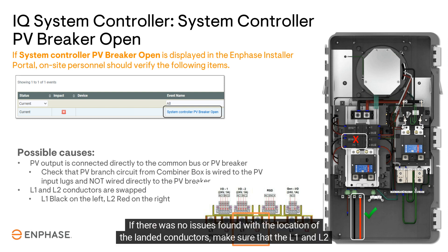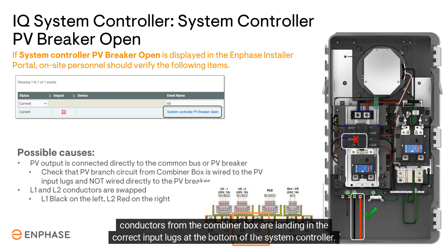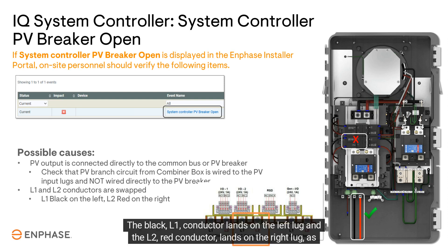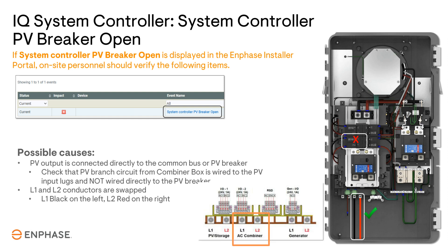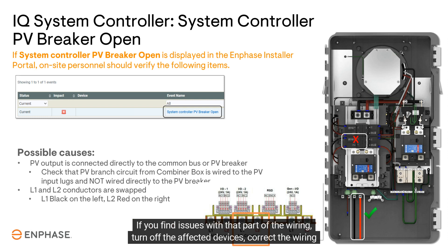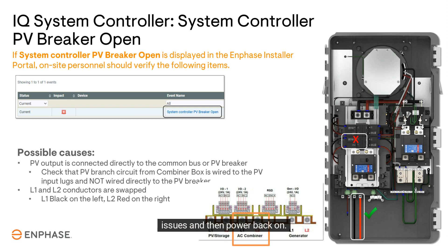If there were no issues found with the location of the landed conductors, make sure that the L1 and L2 conductors from the combiner box are landing in the correct input lugs at the bottom of the system controller. The black L1 conductor lands on the left lug and the L2 red conductor lands on the right lug, as shown in the images. If you find issues with that part of the wiring, turn off the affected devices, correct the wiring issues, and then power back on.